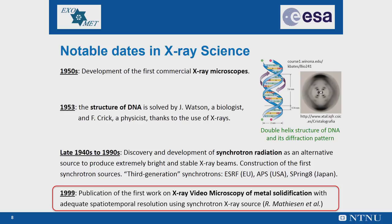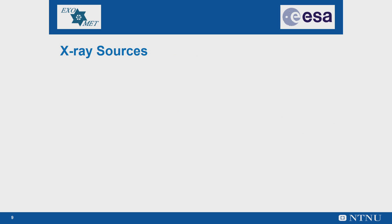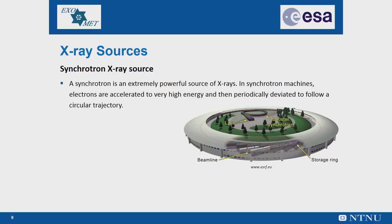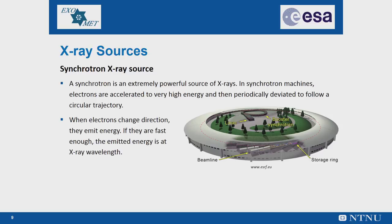Temporal resolution in the fraction of a second and spatial resolution in the order of micrometers. X-rays abound around us and X-ray sources can be both natural and artificial. A synchrotron X-ray source is an extremely powerful source of artificial X-rays. In synchrotron machines, electrons are accelerated to very high energy and then periodically deviated to follow a circular trajectory. When electrons change direction, they emit energy, and if they are fast enough, the emitted energy is at the X-ray wavelength.